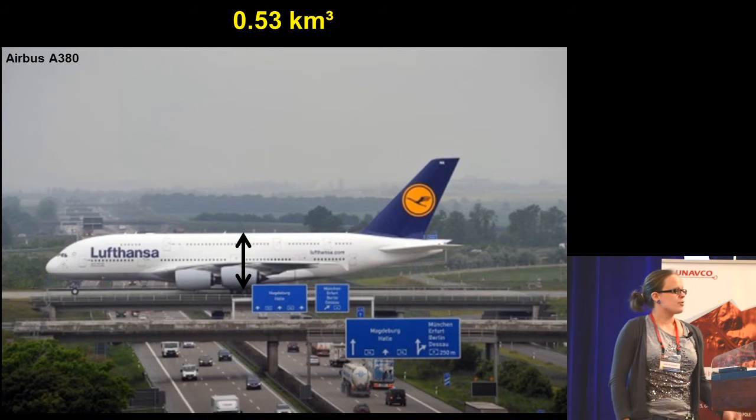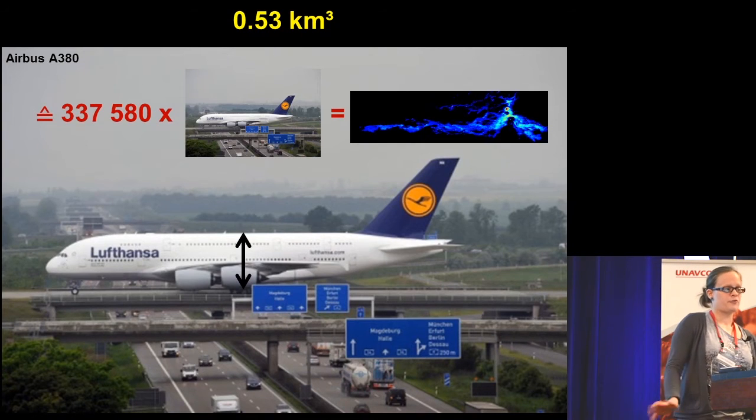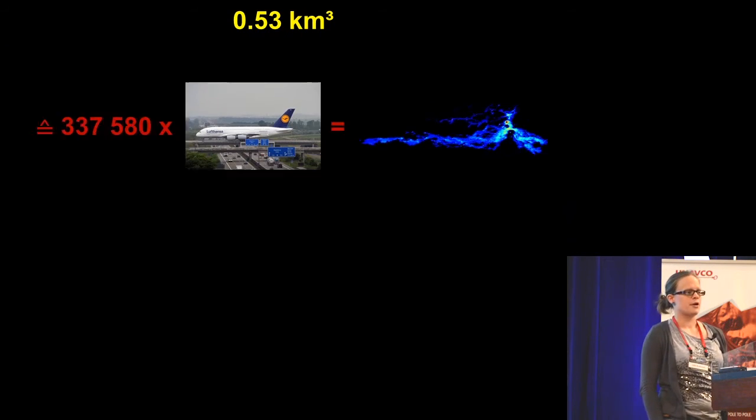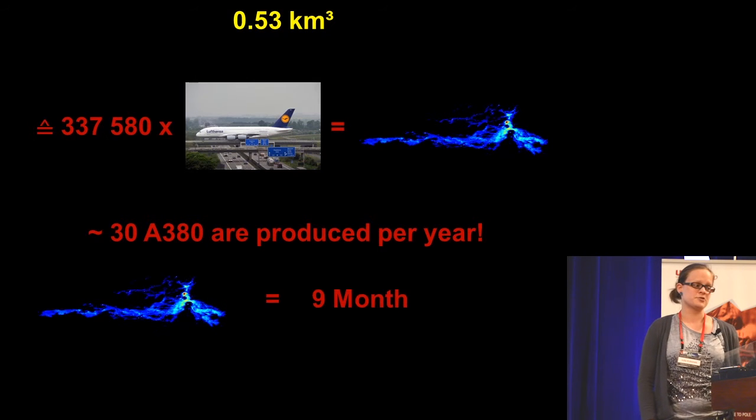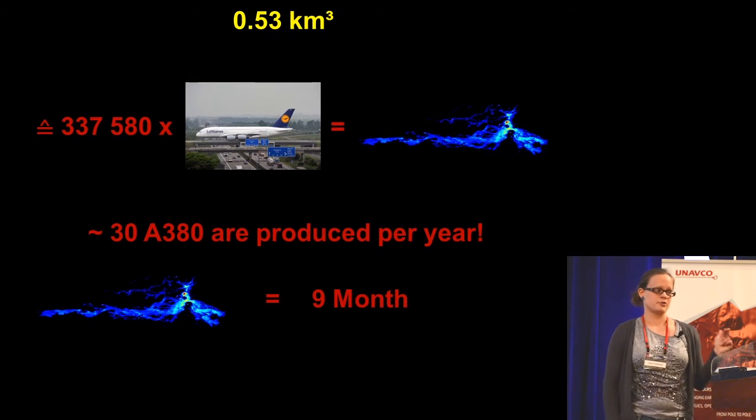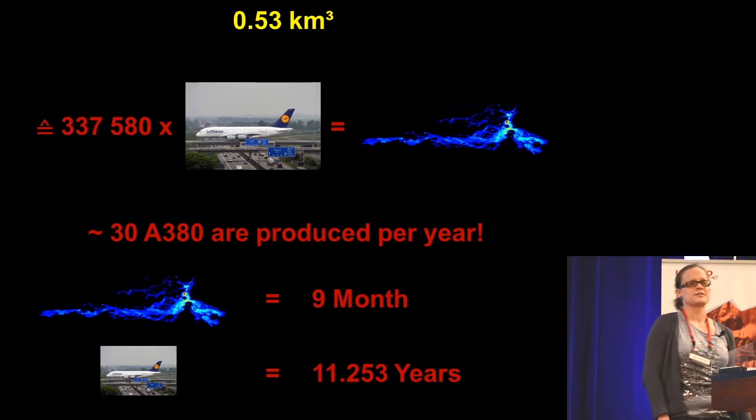So I calculated the volume, or I found the volume for the Airbus, and I need about 340,000 Airbuses to generate my lava flow. When you imagine about 30 of those machines are produced per year, the lava flow took nine months to be produced, I would need 11,000 years to produce the same amount of Airbus.